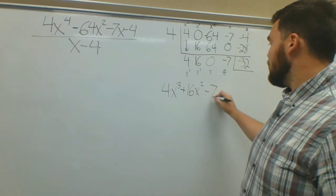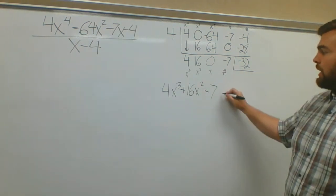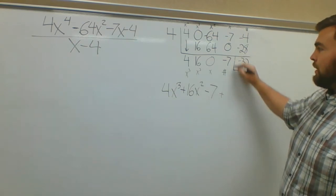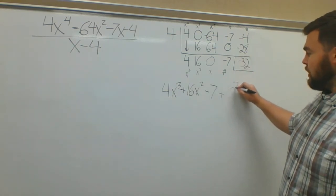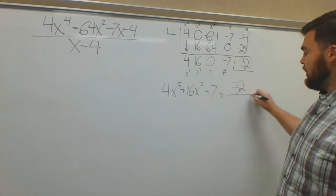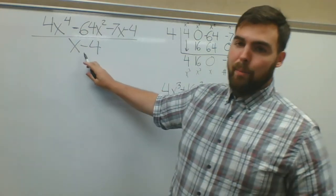Minus 7. And then my remainder: I'm going to do plus whatever my remainder is, negative 32, divided by what I originally divided this problem by, x minus 4.